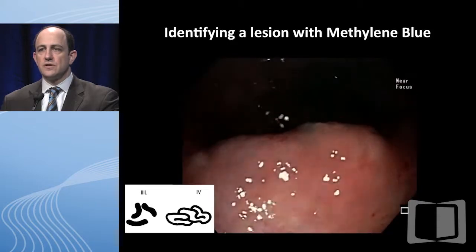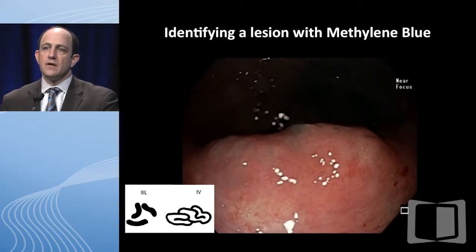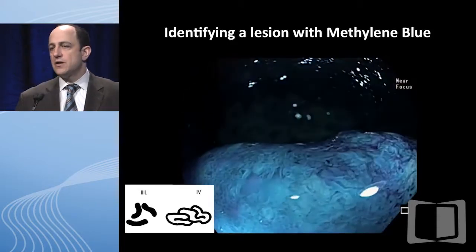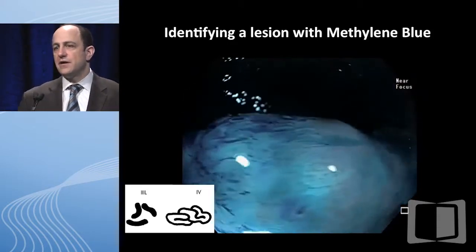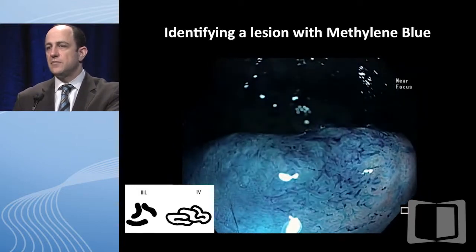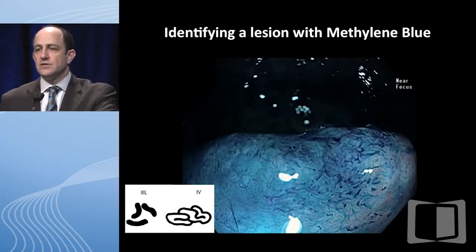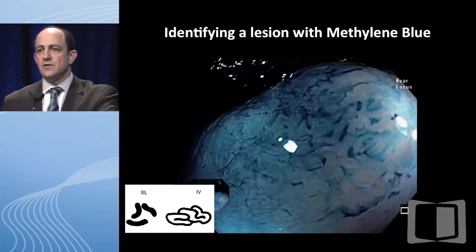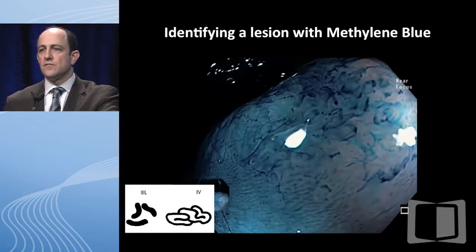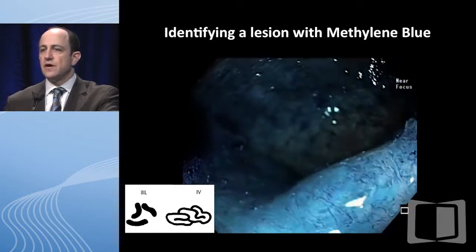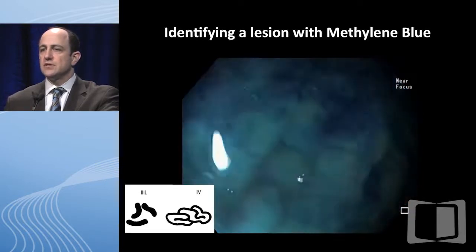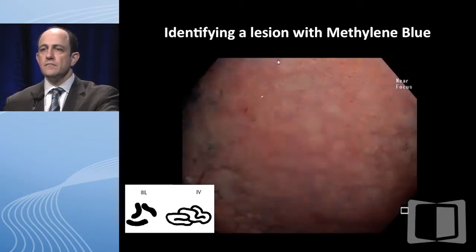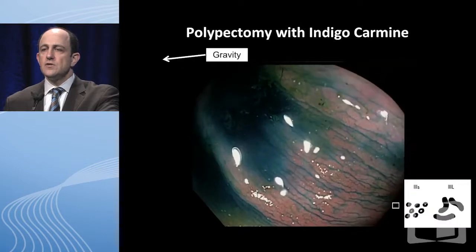Here's methylene blue spraying — you see the power wash going right on there, and now you can actually see the pit pattern appearing. I took a still picture of it so you get a nice image of those curvilinear appearances. That was a low-grade dysplastic lesion that I removed by EMR.